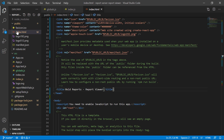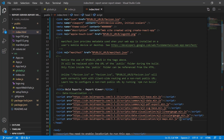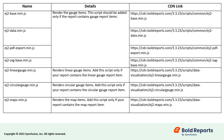Next, let's refer to the necessary scripts in the React application. Open the index.html file from the public folder and reference the scripts in the head tag. I have listed the purpose of each script in the following table. EJ2Base.min.js, EJ2Data.min.js, EJ2PDFExport.min.js, and EJ2SVGBase.min.js are used to render gauge items. EJ2CircularGauge.min.js renders circular gauge report items.